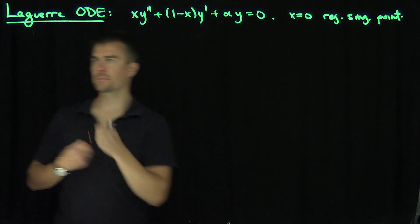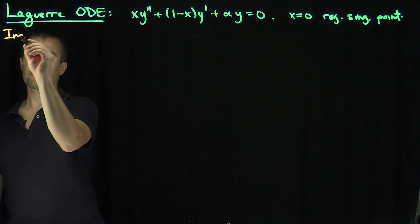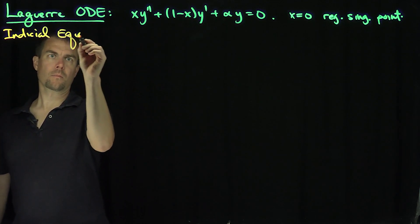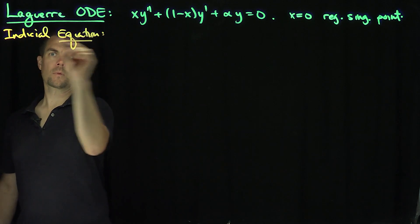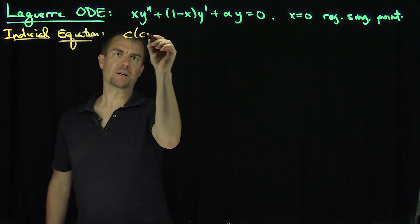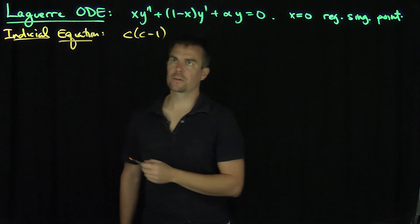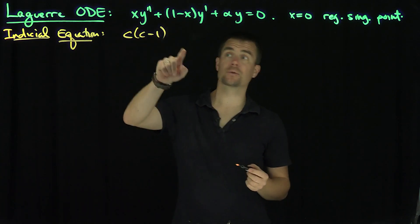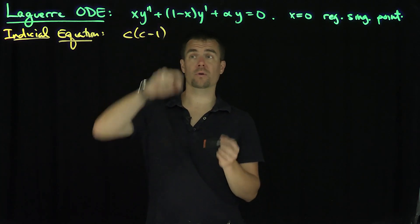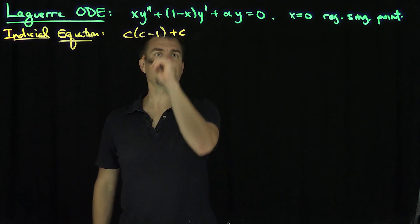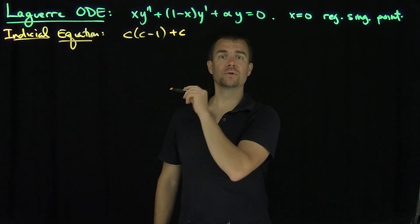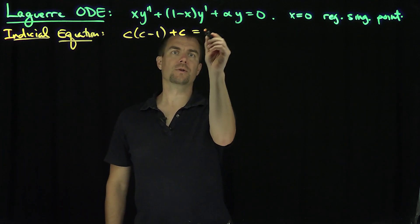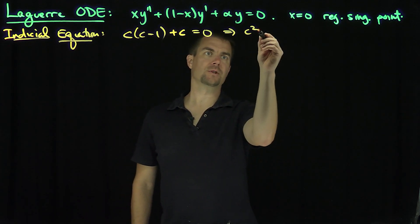The indicial equation: we have c times c minus 1, and then we need to find the p0 term. Dividing by x gives 1 over x minus 1, so p0 is equal to 1, the coefficient of 1 over x. That gives a c term. The q0 term, the coefficient of 1 over x squared, is 0 since there is no 1 over x squared term. So the equation becomes c squared equals 0.